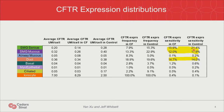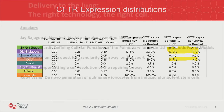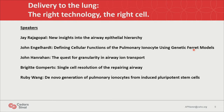This distinguished group of speakers are going to address this question. Jay Raj Gopal is going to talk about new insights into airway epithelial hierarchy. John Engelhardt is going to define cellular function of the pulmonary ionocyte using genetic ferret models. John Engelhardt is also going to talk about the quest for granularity in airway ion transport. Bridget Gongertz is going to talk about single-cell resolution of the repairing airway. And my wonderful colleague Dr. Ruby Wang is going to talk about DNA generation of pulmonary ionocytes from induced pluripotent stem cells. With that, I request Dr. Jay Raj Gopal, professor of Harvard Medical School and professor of the Center for Regenerative Medicine at MGH, to come and present.